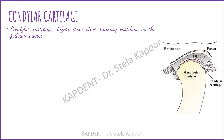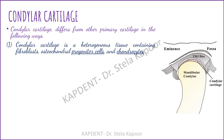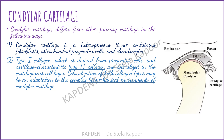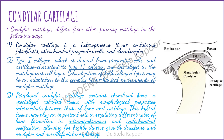The mandibular condylar cartilage differs from primary cartilage — such as articular cartilage, the nasal septum, and growth plates of long bones — in several ways. First, it is a heterogeneous tissue containing fibroblasts, osteochondral progenitor cells, and chondrocytes. Second, there is co-localization of both type 1 and type 2 collagen, possibly an adaptation to the complex biomechanical environment. Third, there is a hybrid layer of chondroid bone in the peripheral condylar cartilage, which regulates different rates of bone formation in intramembranous and endochondral ossification.